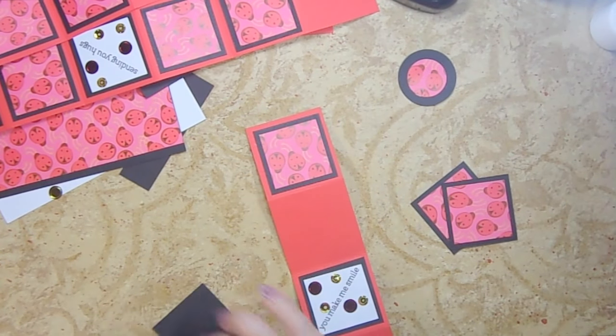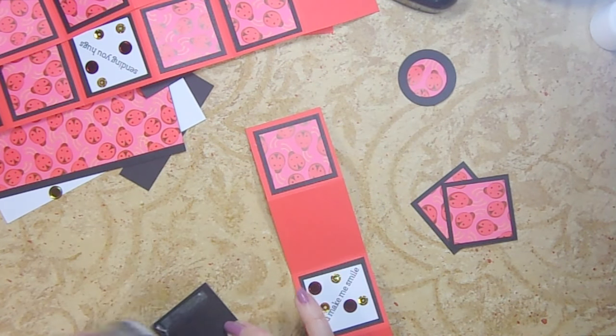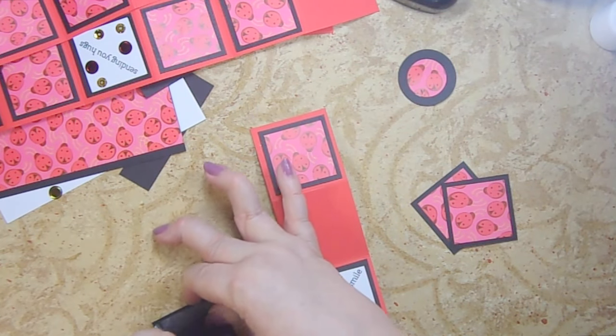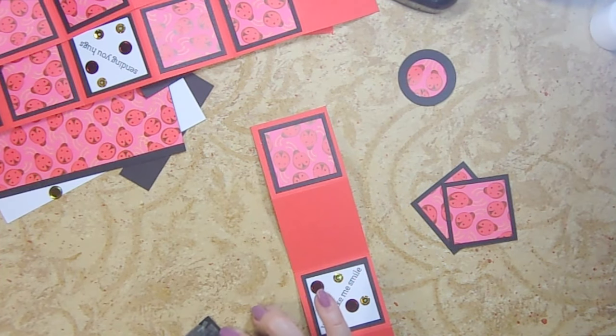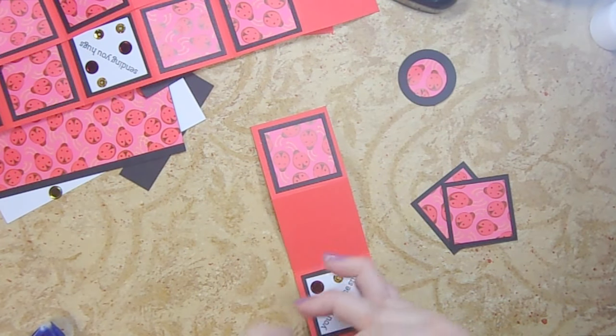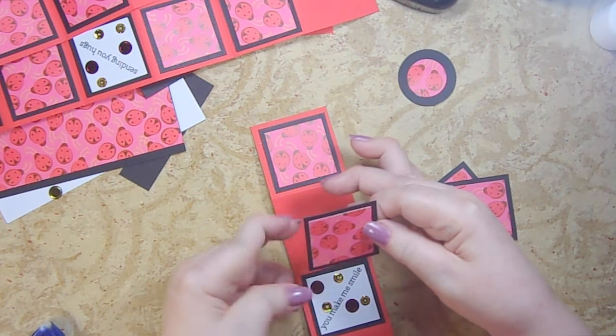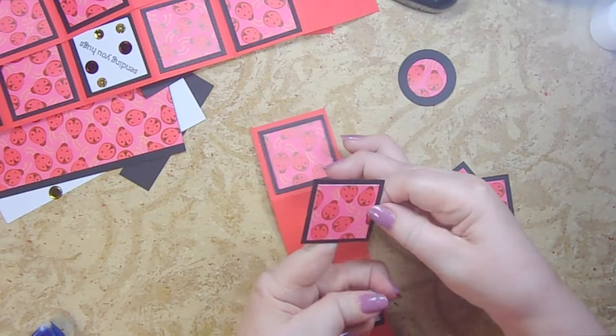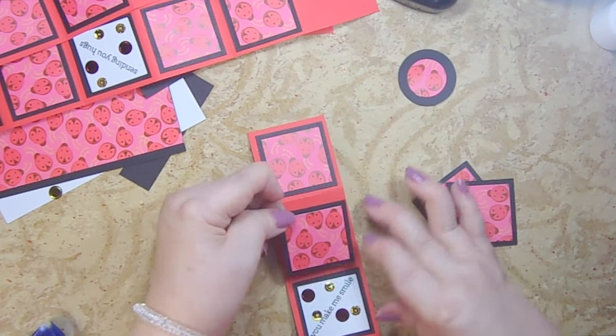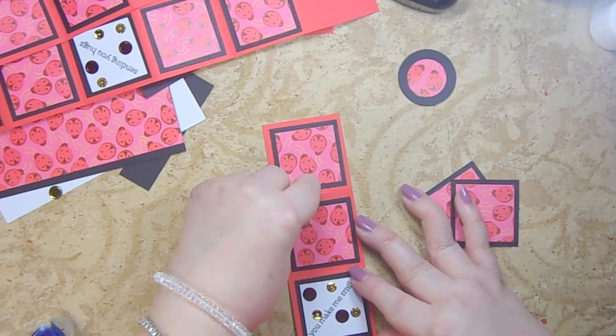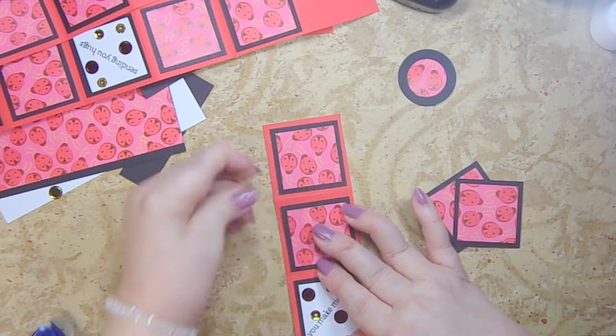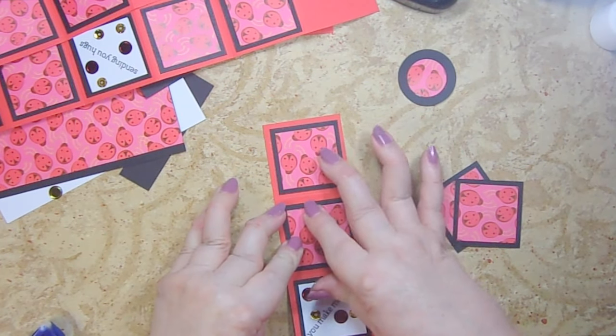And then I made it so that my ladybugs, most of them are going in an up and down direction. Like if I had ones like this one where the center one is in a direction, I tried to make it so the center one is going straight up and down. Follow that? I want it to point up like that.